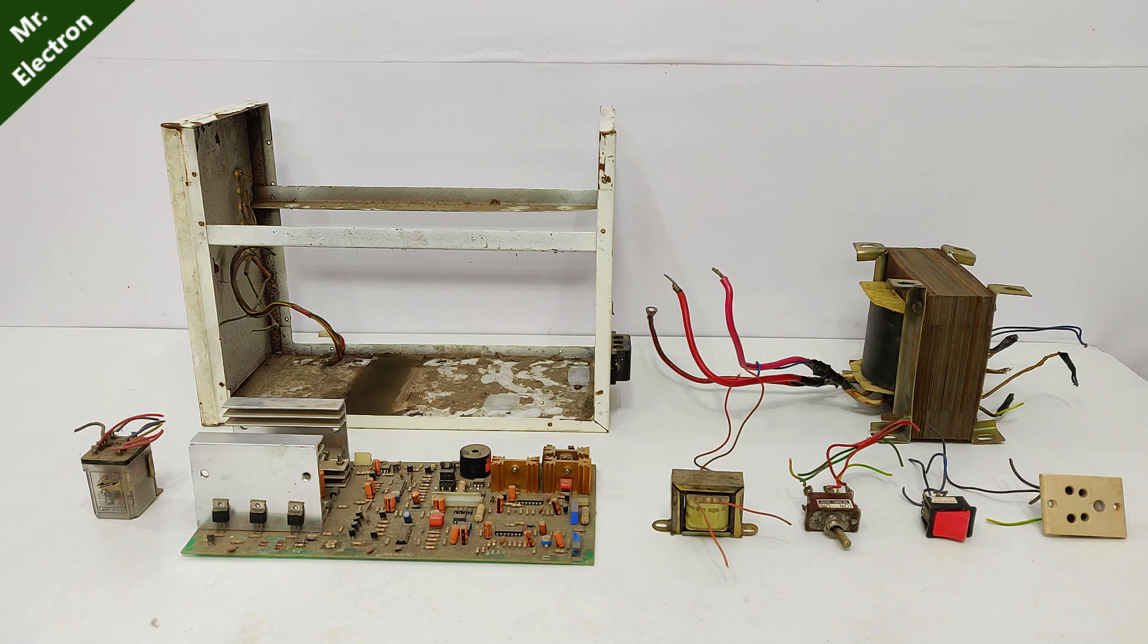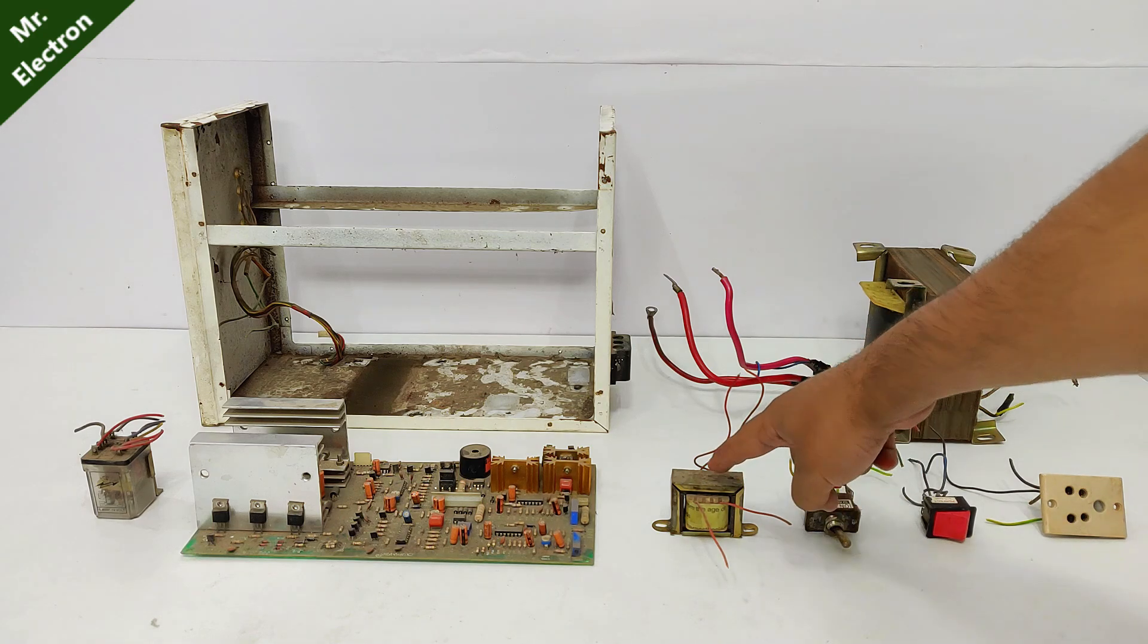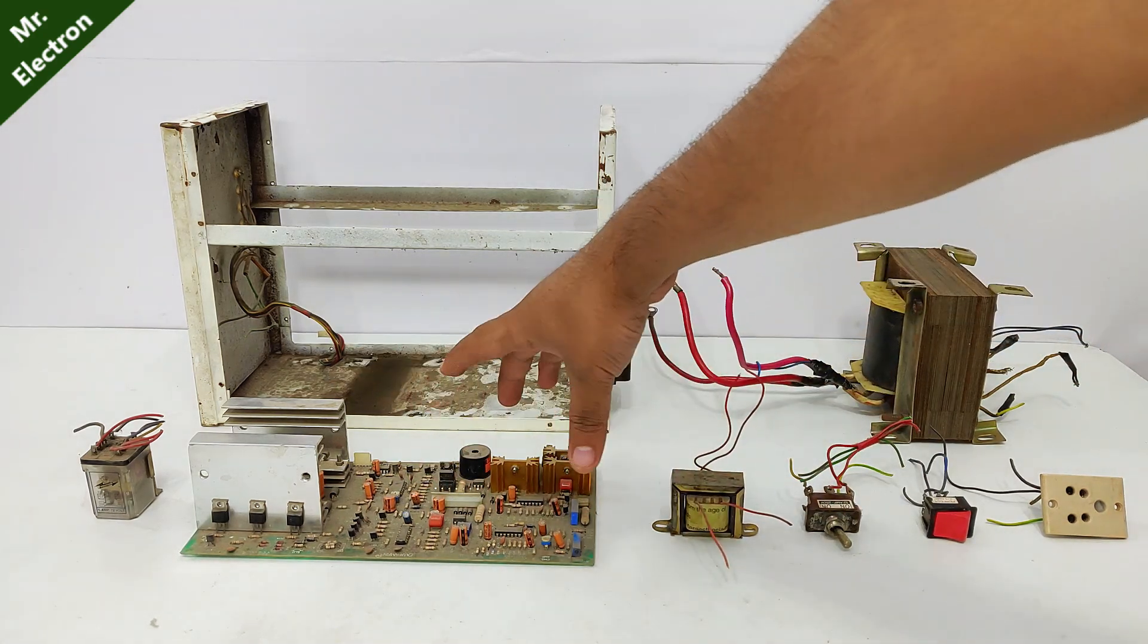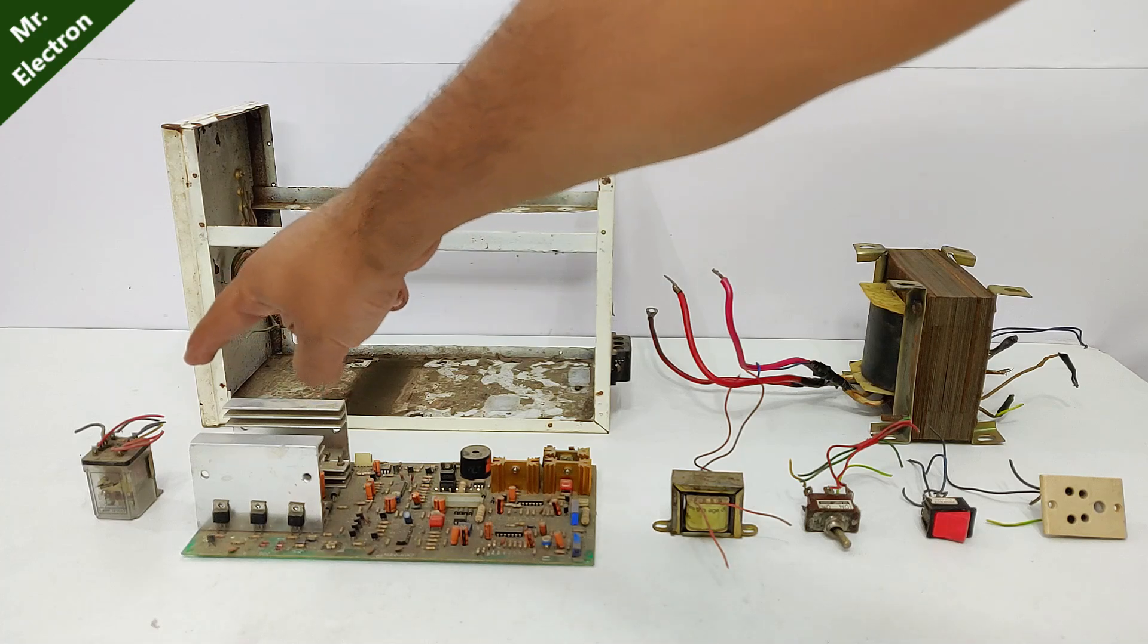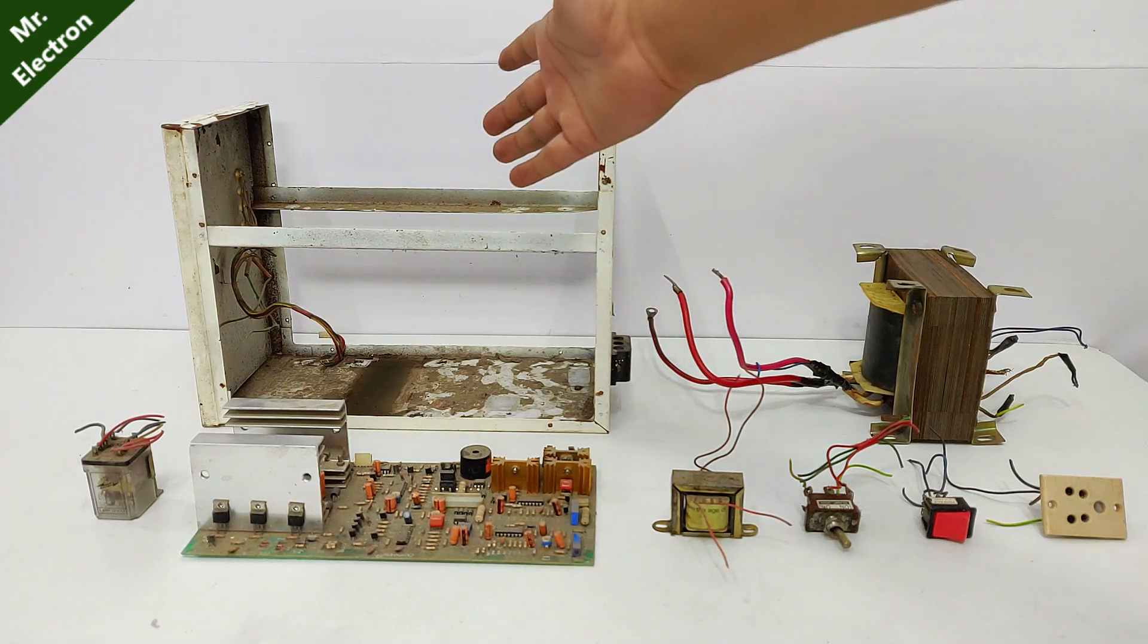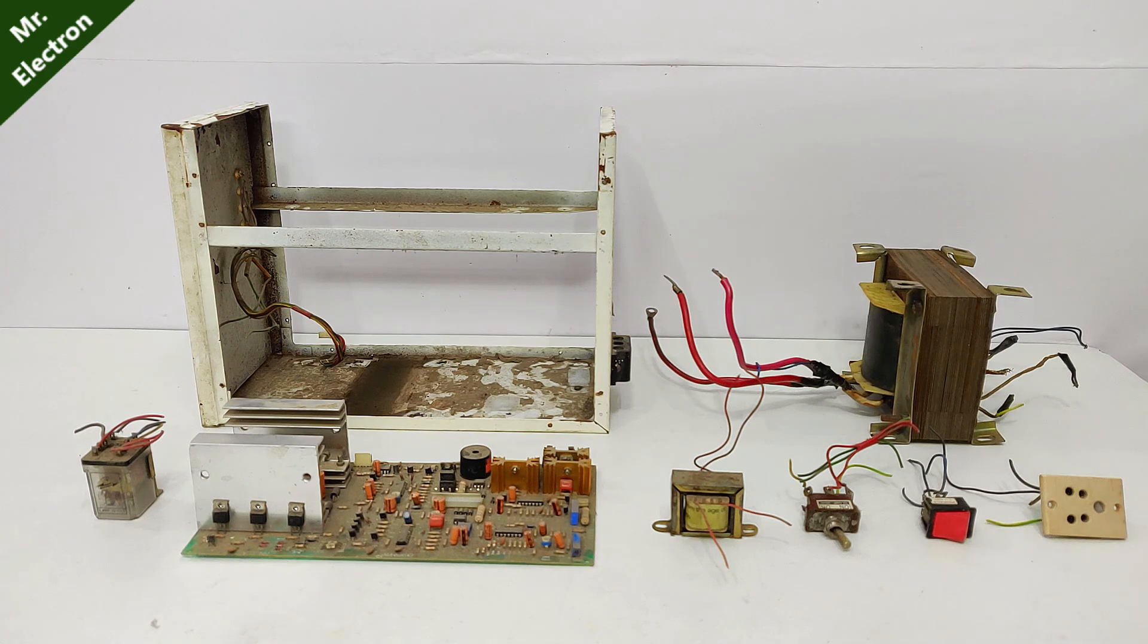So guys, finally the components that I have salvaged are one socket, two switches, high ampere switches, one small transformer for operating the relay, one PCB with so many components and heat sinks, MOSFETs, one huge relay case for future use and most important, a transformer, one kilowatt transformer.